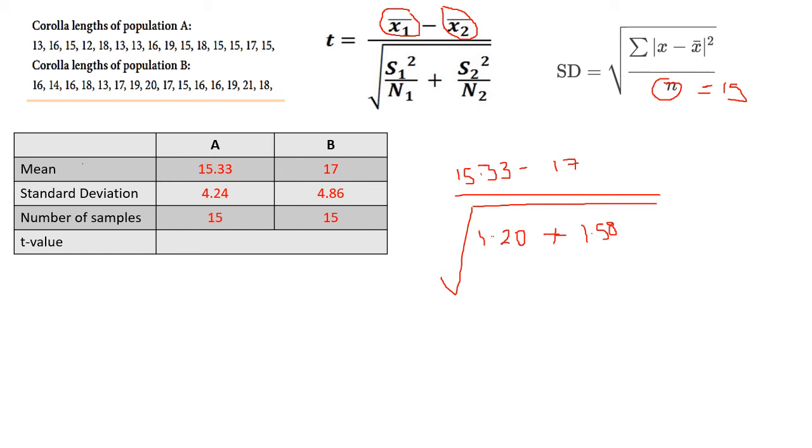Then 4.86 squared divided by 15 gives us 1.58. If we add these two together, we are going to get 2.78. 15.33 minus 17 gives us minus 1.67, but we just write 1.67. If we take the square root of 1.20 plus 1.58, which is 2.78, we get a value of 1.67 as well. And so in this case, our t value would be 1.0.